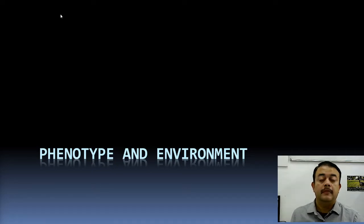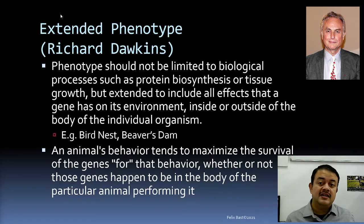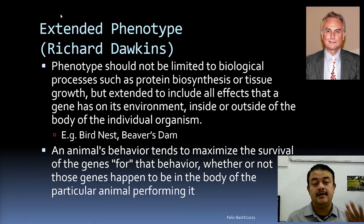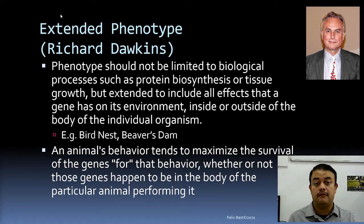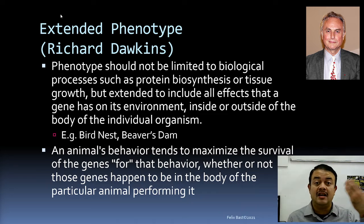Here are some terms connected with phenotype and environment in evolutionary biology. The first one is about extended phenotype. This term is introduced by Richard Dawkins. As the name says, extended phenotype — the phenotype as we know it is about our gross morphology and traits, like the expression of proteins and how proteins and enzymes contribute to the development of organs.